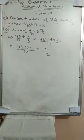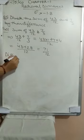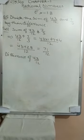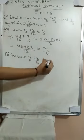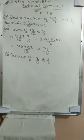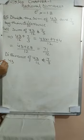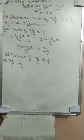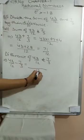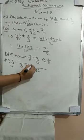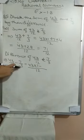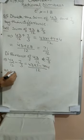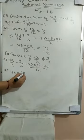Now we are going to find the difference of 43/12 and 7/3. Difference means we have to subtract. So we write 43/12 minus 7/3. Again we take the LCM because the denominators are different. LCM is 12. In 12's table, 12 comes 1 time, so 43 into 1 minus; in 3's table, 12 comes 4 times, so 7 into 4. That gives 43 minus 28 upon 12.